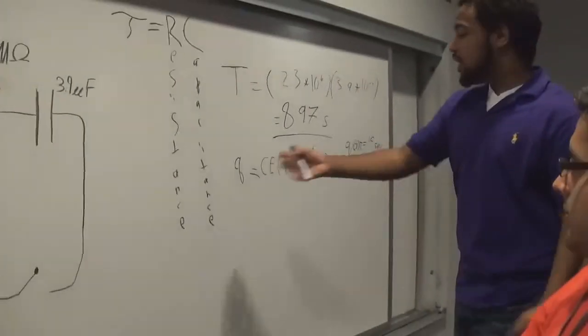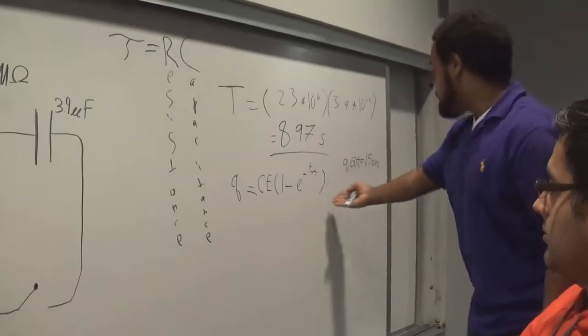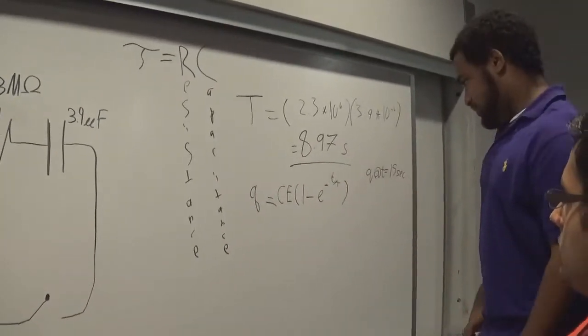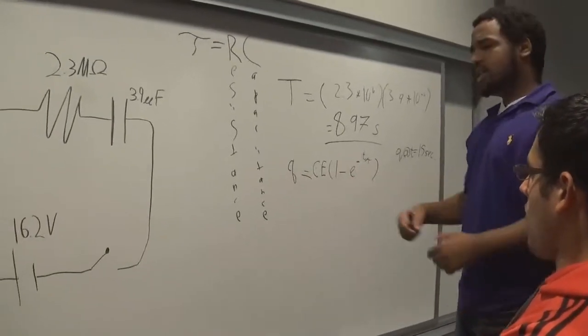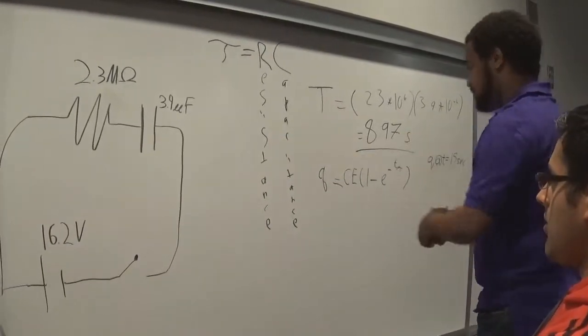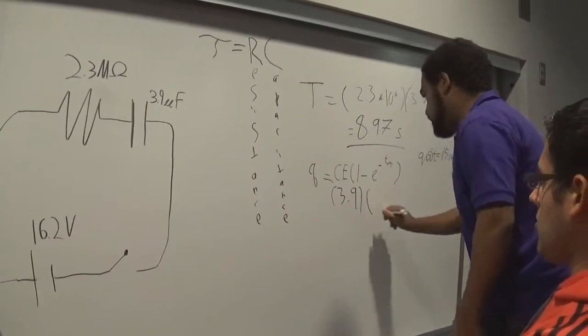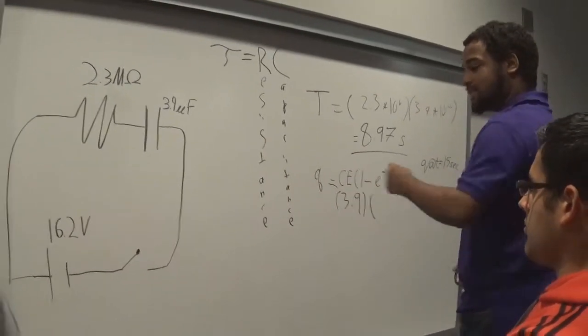So now what do we do? We need to find the charge. So we will use this equation. Let's say the time will be 15 seconds. So we are going to use CE. C for our 3.9. Here we go. We are going to write that down. Then we are going to use E, which is going to be 16.2.